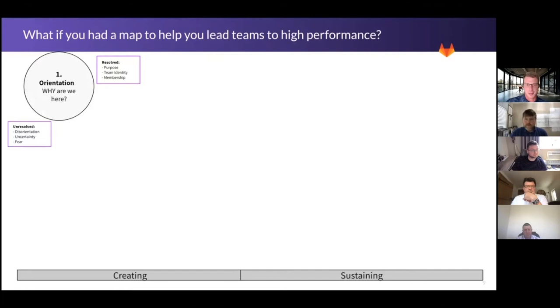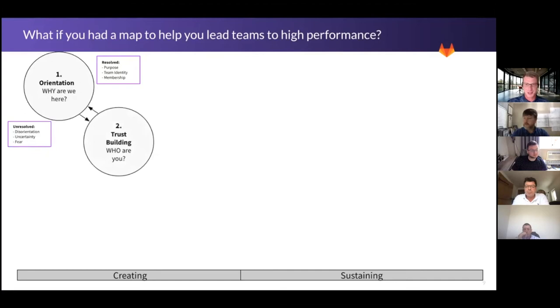So orientation. Why are we here? John talked a little bit about purpose, identity, your membership. What's our mission? What are we actually doing? If you can't answer your purpose or why you're here, you can consider folks on your team maybe having disorientation, uncertainty, fear. They don't know what's happening, but if they do, there's a sense of purpose and mission.